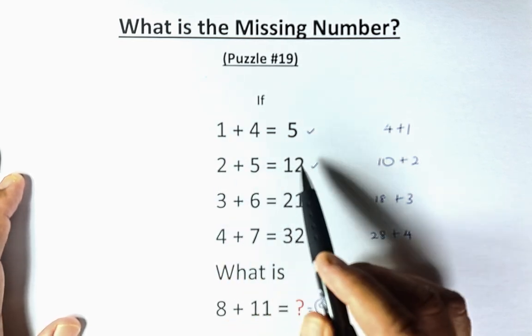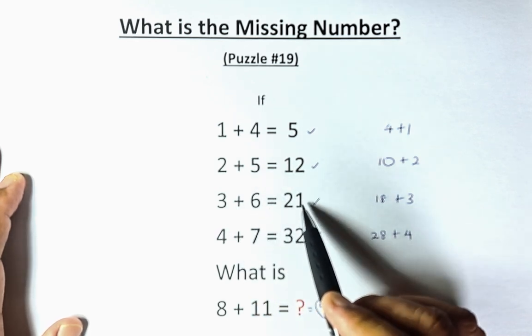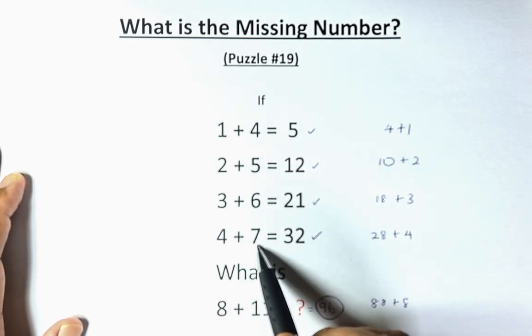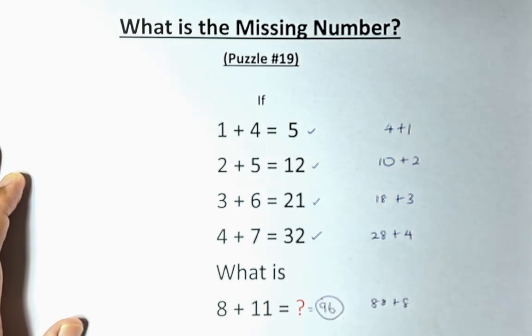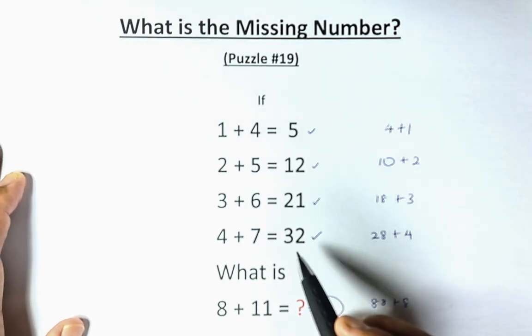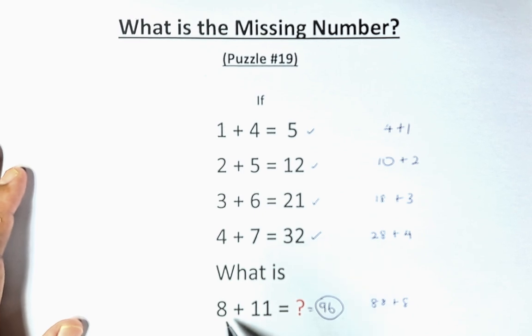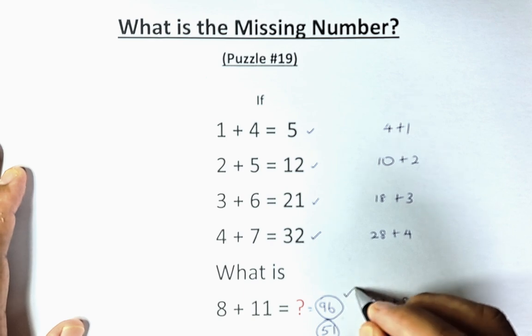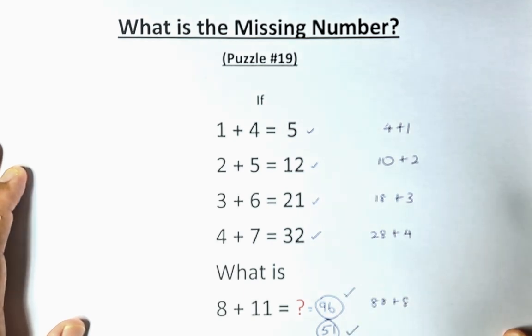And 12, you add the next number: 12 plus 3 plus 6 is going to be 21. 21 plus 4 plus 7 is going to be 32. And then we're going to get the next answer: 32 plus 8 is 40, 40 plus 11, the answer is 51. So the answer is either 96 or 51.